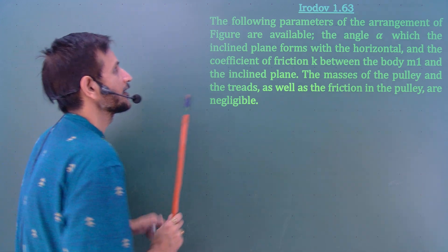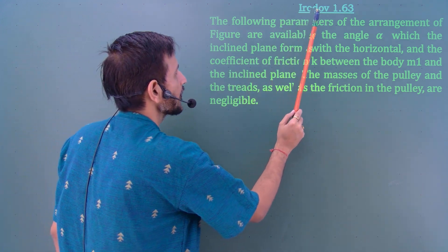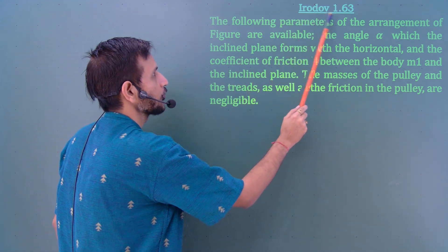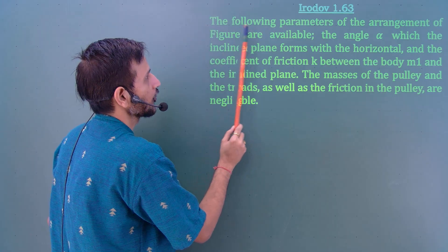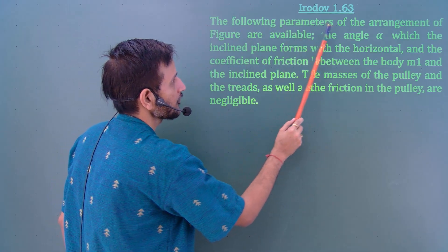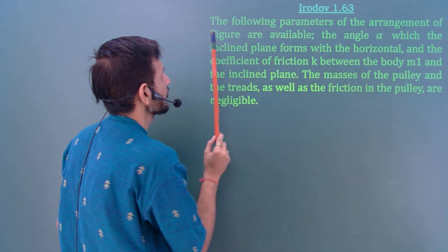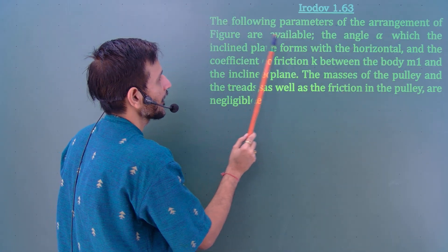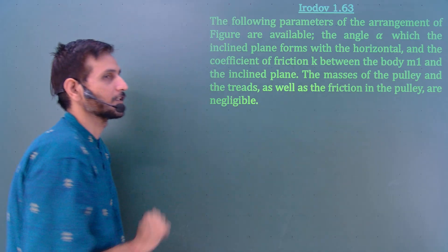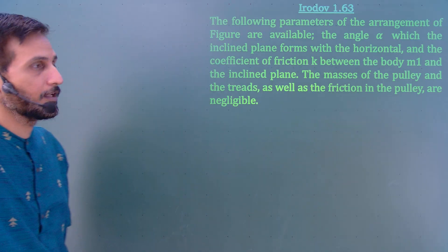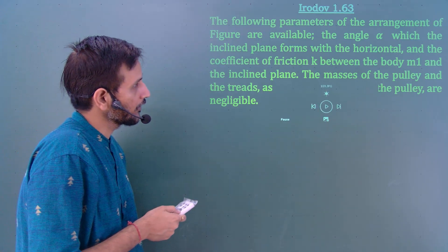Students, let us solve this Irodov problem 1.63: 'The following parameters of the arrangement of the figure are available.' In this question there is a figure — let me first show the figure.